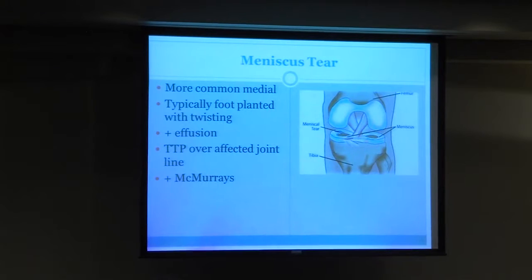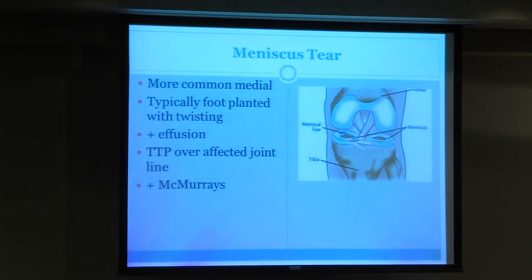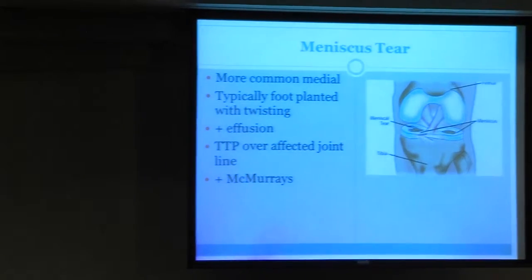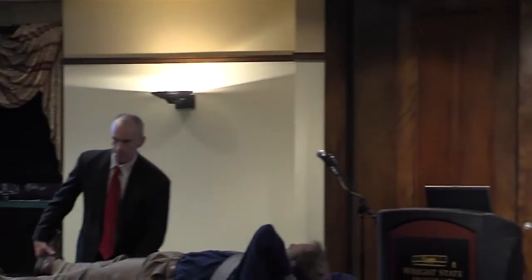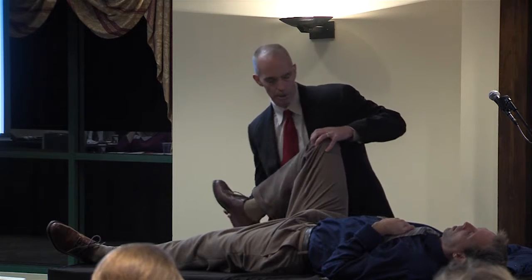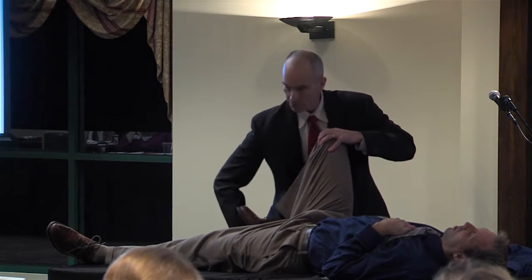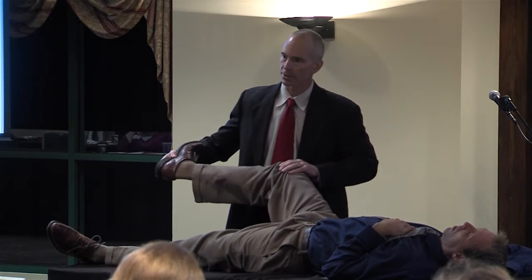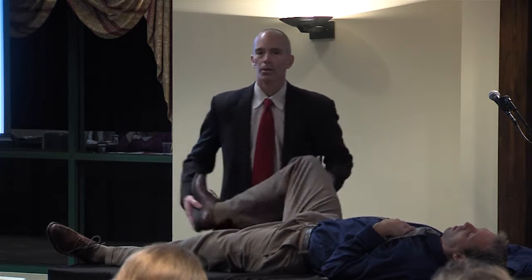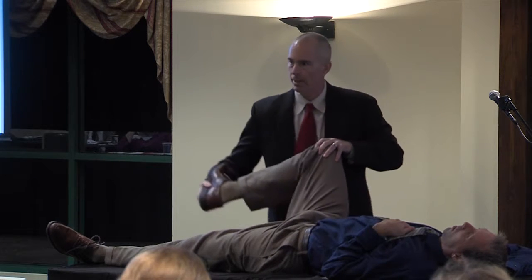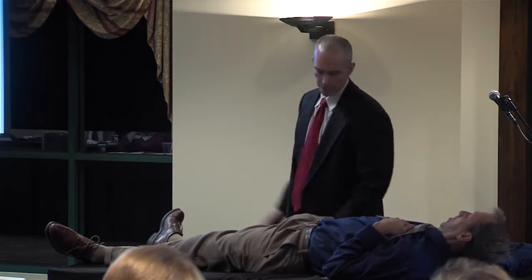Meniscus tears hurt where the meniscus is still attached. The meniscus itself does not have any nerves, so the meniscus doesn't directly hurt — it's where this torn piece is attached and being pulled that causes the pain. That's why they have joint line tenderness right there. With the McMurray's, you flex the knee to engage that piece, start with it slightly rotated, and then come the other way while keeping a varus stress on it as you go into extension. With a meniscus tear, you may feel a pop, but it should elicit pain as you grab that piece and pull it on the capsule.